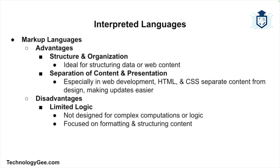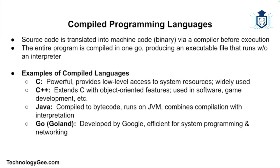Now let's move on to compiled programming languages. These are languages where the source code is translated into machine code or binary through a compiler before execution. The compilation process translates the entire program in one go, creating an executable file that can run on its own without the need for an interpreter. Examples include C, one of the oldest and most widely used languages that provides low-level access to system resources; C++, an extension of C adding object-oriented programming features used in system software and game development; Java, which is compiled into bytecode before being executed by the Java Virtual Machine; and Go, a statically typed compiled language developed by Google, known for efficiency in system programming and networking.